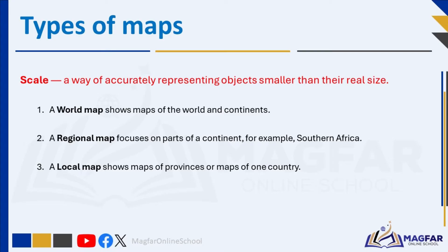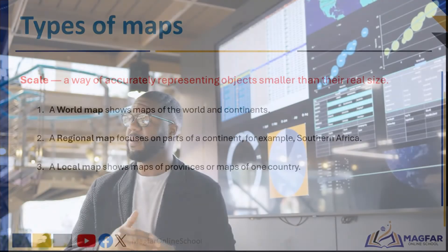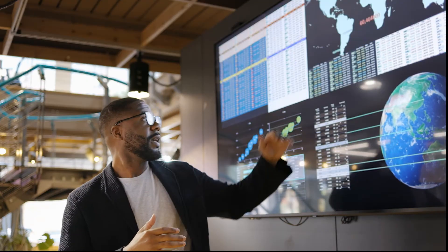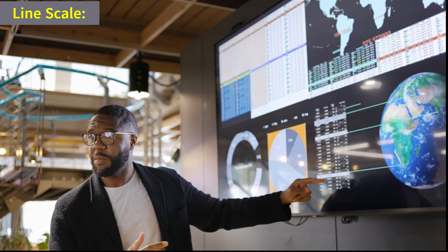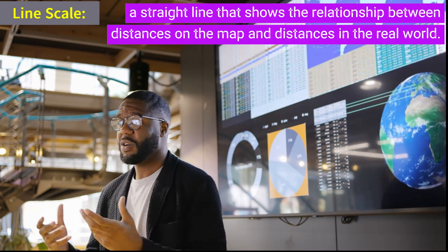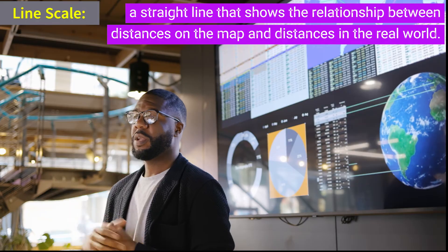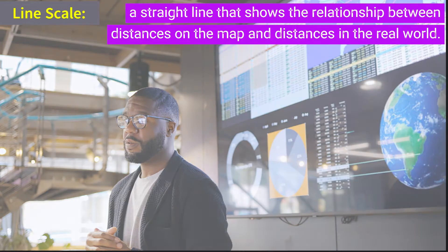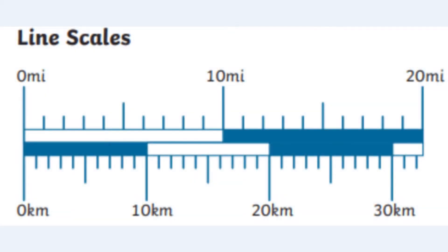Within these three categories, maps have different scales depending on the size of the area they show. We have line scales, word scales and ratio scales. Think of the map like a giant puzzle of the world, but shrunken down so we can hold it in our hands. Imagine we have a special ruler printed right on the map. This ruler helps us figure out how far things are from each other in real life. This special ruler, or line scale, is usually split into equal parts. The line scale might say that one centimeter on the map equals 100 kilometers in real life.